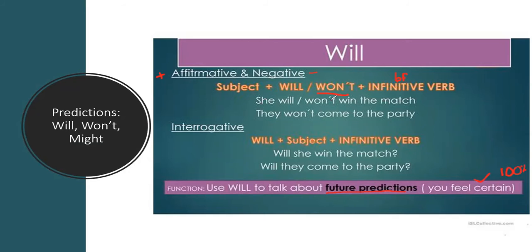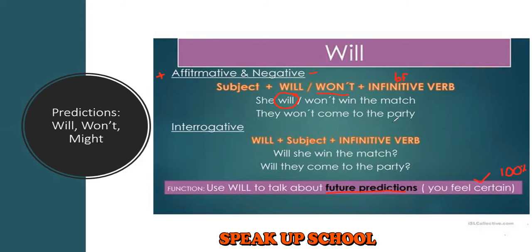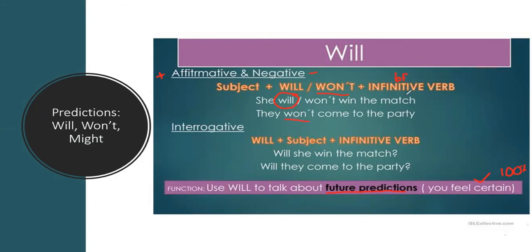For example: 'She will win the match' or 'She won't win the match.' You are 100% sure that either she will win it or she won't. Then we have 'They won't come to the party.' Imagine Miss Carlita throws a party for teachers' day, I invite all of you, but it's raining, there's a storm, and there's COVID — so I am sure you will not be coming, so I say 'They won't come to the party.'